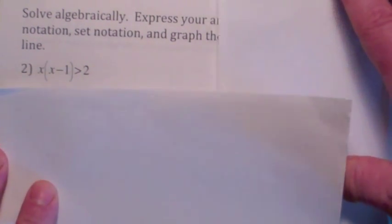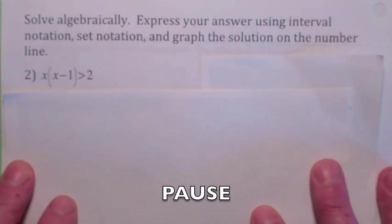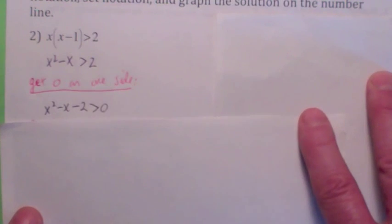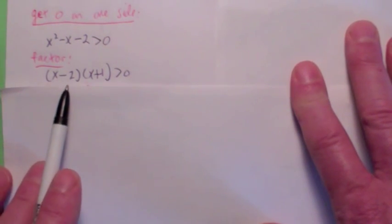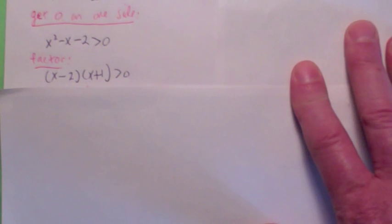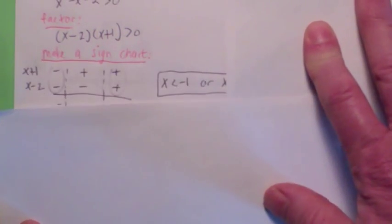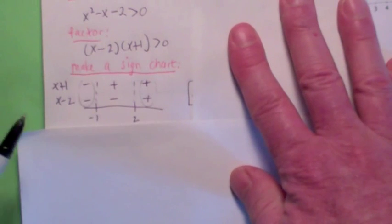Let me give you one to try — go ahead and hit the pause button. To solve this quadratic inequality, you're going to want to multiply it out and get zero on one side, and then factor. The question is, when is the product of two things greater than zero? That means they both have to have the same sign — either both factors are negative or both factors are positive. The best way to answer that is to make a sign chart for these two factors: x minus 2 and x plus 1.